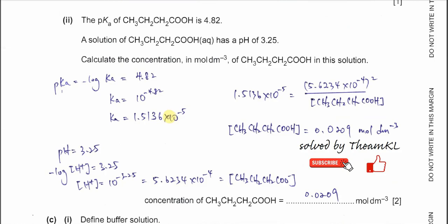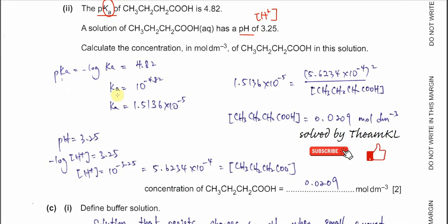Part B2: this calculation is a bit involved, but step by step it should be fine. The pKa for butanoic acid is 4.82 and the pH given is 3.25. From pKa and pH you can get two values: Ka and the concentration of hydrogen ion. Because pKa = −log Ka, Ka = 10⁻⁴·⁸² = 1.5136 × 10⁻⁵.